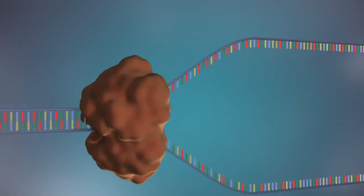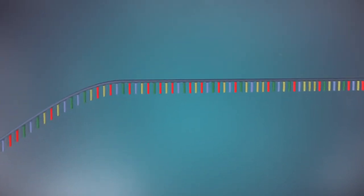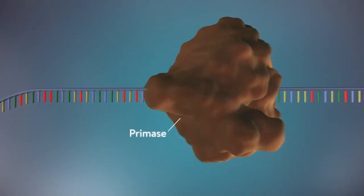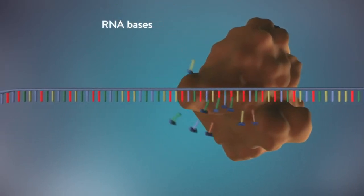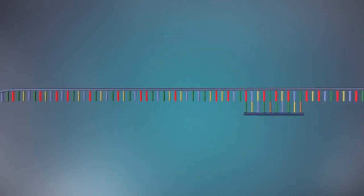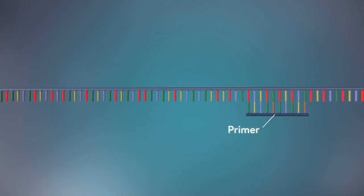The separated strands each provide a template for creating a new strand of DNA. An enzyme called primase starts the process. This enzyme makes a small piece of RNA called a primer. This marks the starting point for the construction of the new strand of DNA.